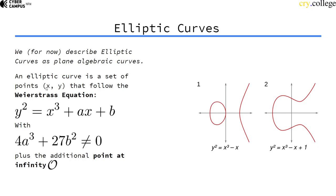So an elliptic curve is a set of points x, y and a mysterious point called the point at infinity.